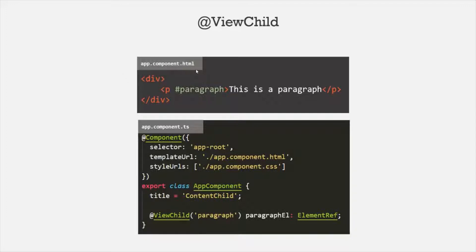For example, here we have this appComponent.html file, and inside this HTML file we have written some HTML. We have a div, and inside that div we have a paragraph element. On this paragraph element, we have used a local reference variable. Then, in order to access this paragraph element from our AppComponent class, we are using ViewChild decorator, and we have passed the local reference of this paragraph element. This ViewChild decorator will assign the paragraph element property with a reference to this paragraph element.